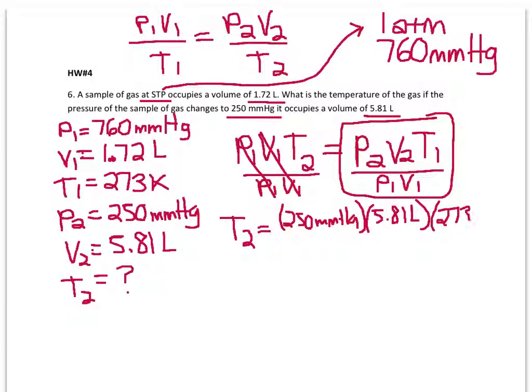And then on the bottom, we've got our P1, our 760, and our V1, 1.72 liters.